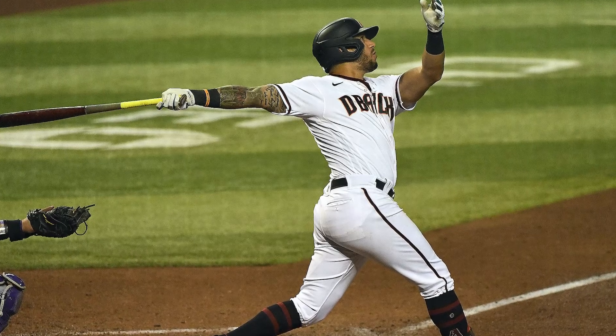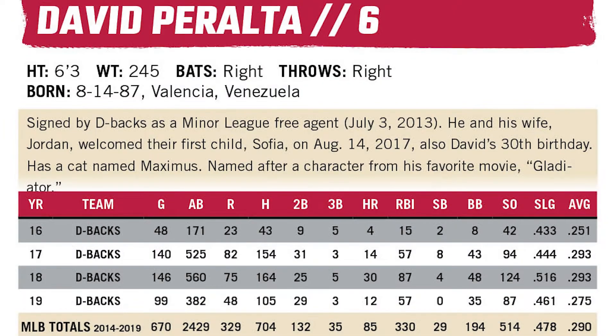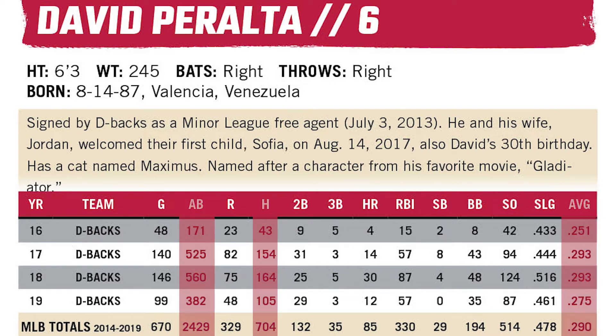One of the most important statistics in baseball is batting average. When you look at the back of a baseball card like this one, you'll see three relevant columns: H for hits, AB for at bats, and the third column labeled batting average, usually abbreviated AVG or BA. The batting average is calculated by dividing the number of hits in the numerator by the number of at bats in the denominator.